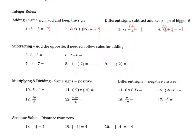The subtracting rule: add the opposite if needed, then follow the rules for adding. For example, number 5: you could just do 6 minus 4 is 2, but you could also think of it as 6 plus a negative 2 — turn subtraction into addition and add the opposite. Since these have opposite signs, we subtract 6 minus 2 to get 4, and take the sign of the larger number, which gives us 4.